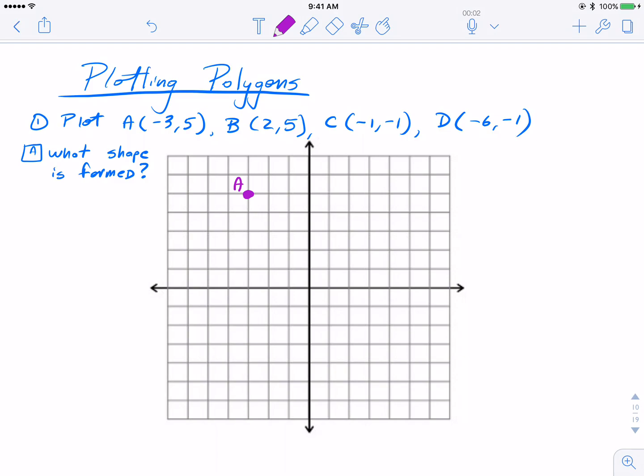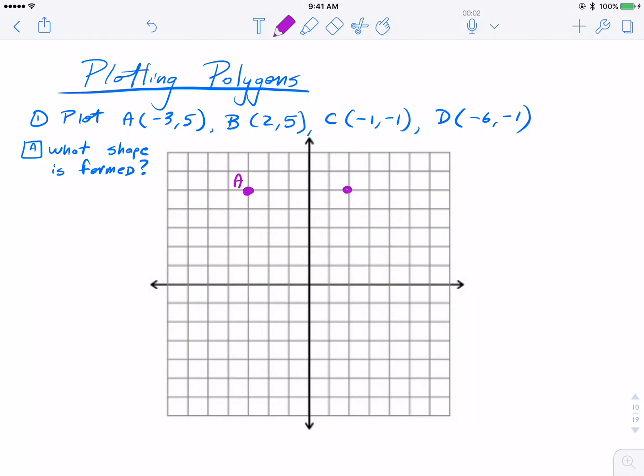Now point B is (2,5), so back to the origin, I'm going to go two to the right now and also five up. So I can kind of cheat and just look at that same plane that A was on. C is at (-1,-1) which means one to the left, one down. And last but not least, (-6,-1) for D. So six to the left and one down.